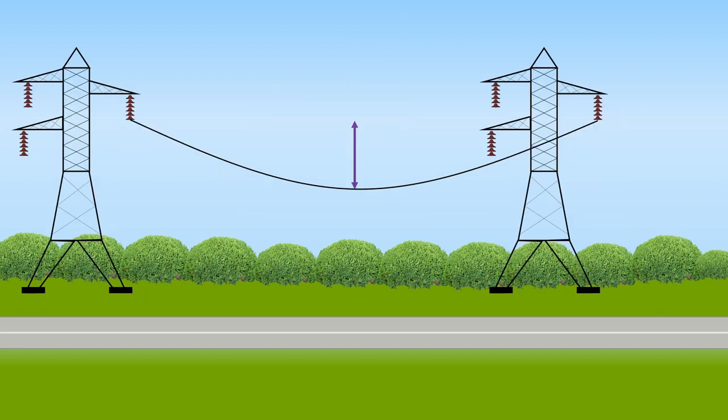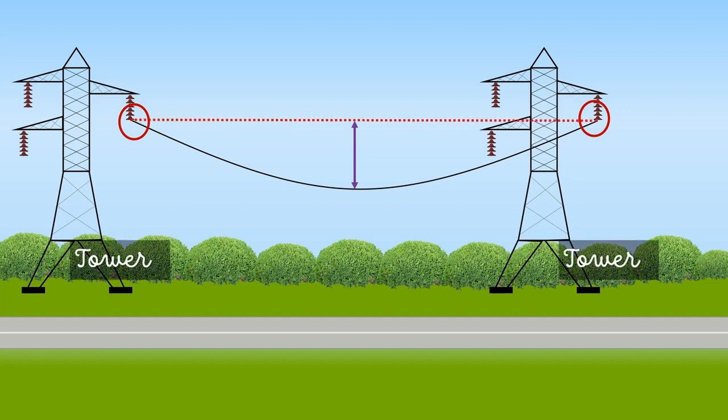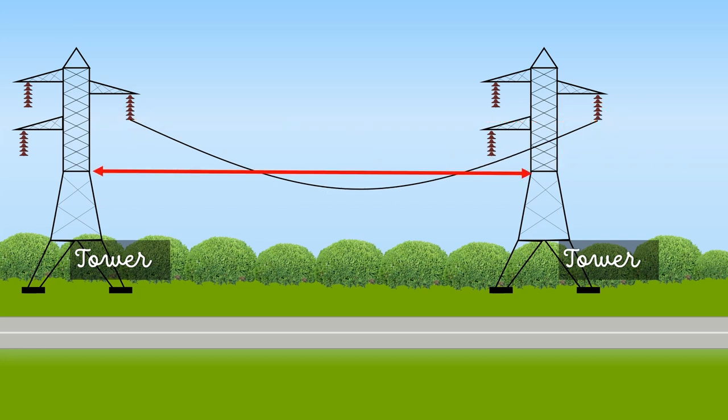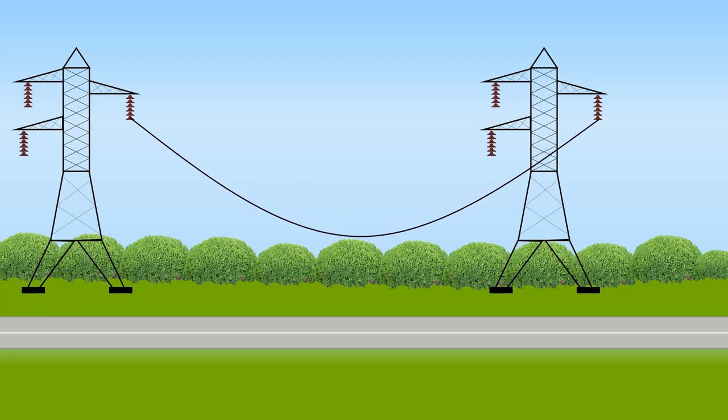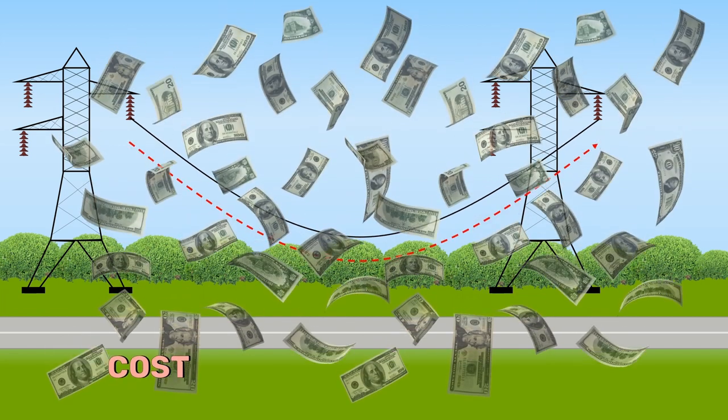The vertical distance between the highest point of the electrical pole or tower where the conductor is connected and the lowest point of the conductor is known as the sag. The horizontal distance between two towers is called the span. The length of the conductor used will be more if the sag is more. This obviously increases the cost.